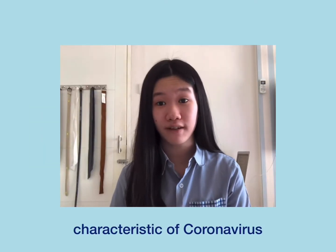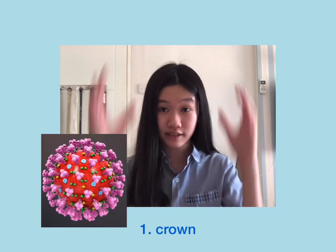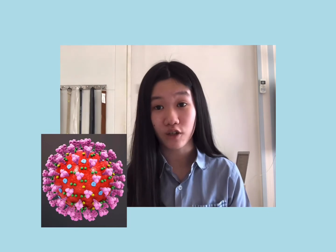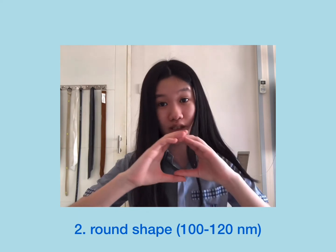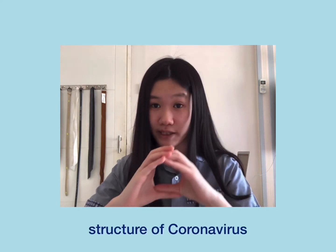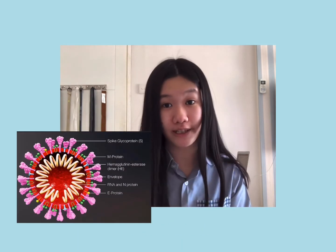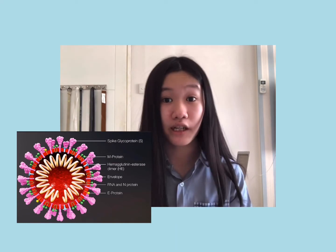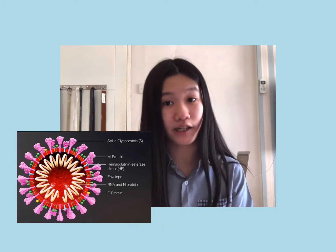Coronavirus has its own characteristics. The most prominent characteristic is it has a crown shape. The crown shape comes from S-protein or spike protein that surrounds the surface of the virus. S-protein plays an important role in the pattern of coronavirus infection to the respiratory cells. Also, this virus has a round shape with a 100–120 nm diameter. There's also M-protein, envelope, RNA, N-protein, and E-protein.